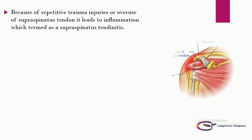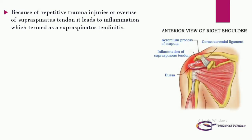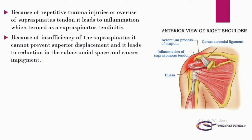Because of repetitive trauma, injuries, or overuse of the supraspinatus tendon, it leads to inflammation termed supraspinatus tendonitis. Due to insufficiency of the supraspinatus, it cannot prevent superior displacement, leading to reduction in the subacromial space and causing impingement.